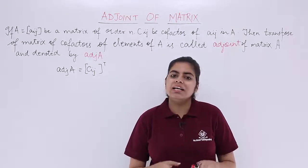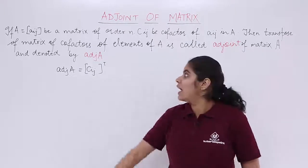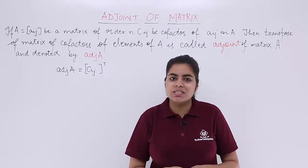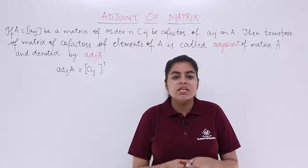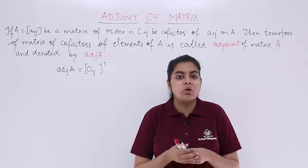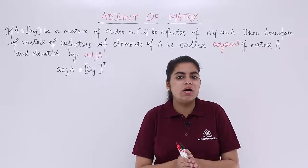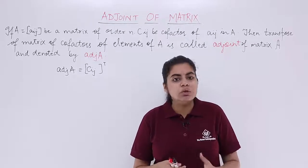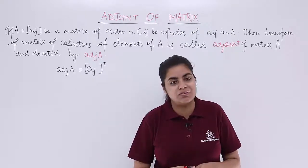In this video, let's see another topic based on matrices and determinants. The topic is named as adjoint of a matrix. Adjoint of a matrix is related to the study of cofactors and transpose, which we have already studied. It is advisable to go through the previous videos on cofactors and transpose before watching this. Always remember that adjoint of a matrix is calculated only for square matrices.